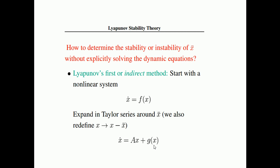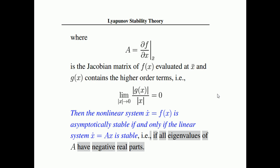In the Taylor series expansion, you get x-dot equals A·x plus g(x), where g(x) is the higher-order derivative terms which you ignore. So your system reduces to x-dot equals A·x, which is a linearized system applicable only in a limited range. Matrix A is the Jacobian matrix — essentially partial derivatives — which we will discuss in a separate lecture series on engineering mathematics. The system x-dot equals f(x) is asymptotically stable if and only if the linear system x-dot equals A·x is stable, i.e., all eigenvalues of A have negative real parts.